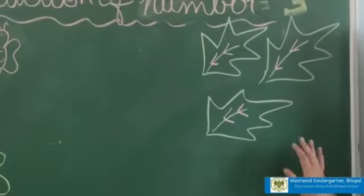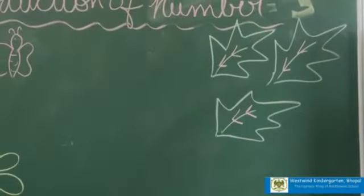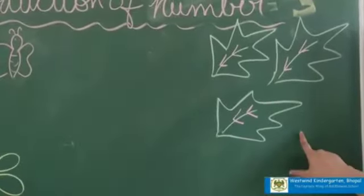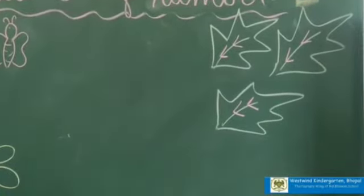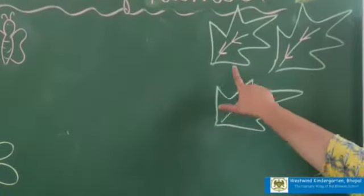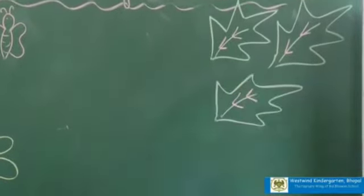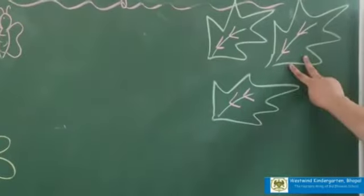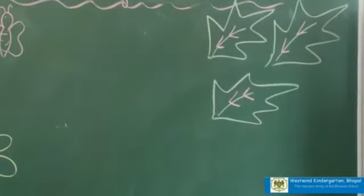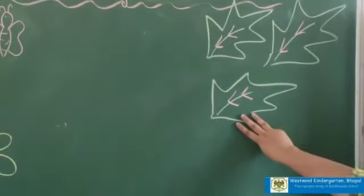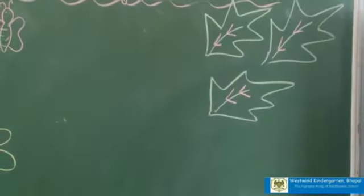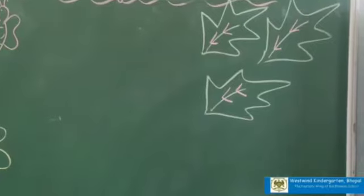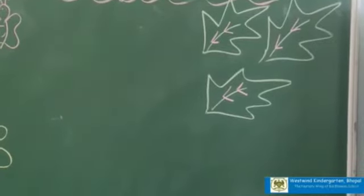What is this? These are leaves. Let's count the leaves: one, two, three. How many? Three.